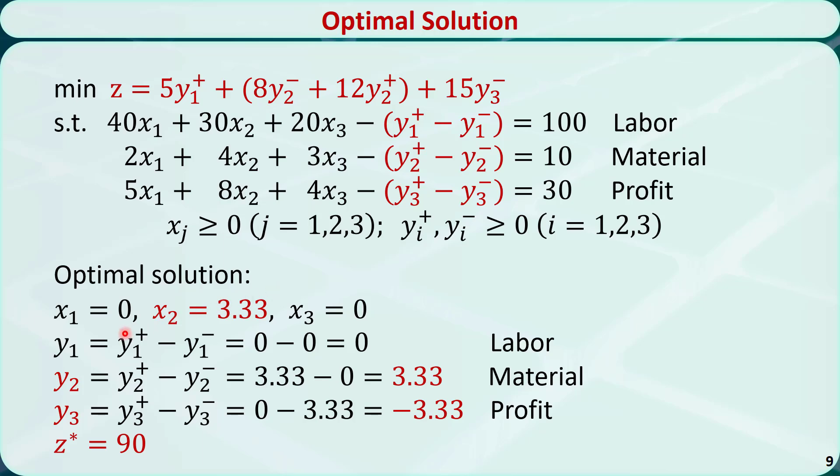This is the optimal solution. The manager should produce 3.33 units of product 2 only. The first goal is achieved - he will not need more than 100 employees. The second goal is not achieved - he will need 3.33 tons more raw material. The third goal is not achieved - the total profit is 3.33 million dollars under the goal. The minimum total penalty z* equals 90.